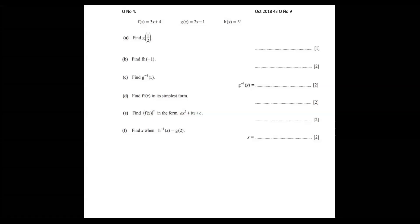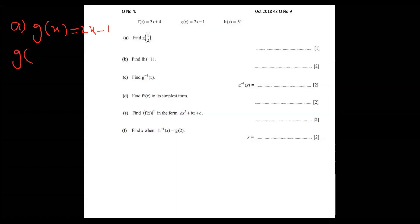This is October 18, variant 43, question number 9. Part a: we have to find g of half. The plan is simple — put half into g. First, I will copy the g function as it is, which is 2x minus 1.